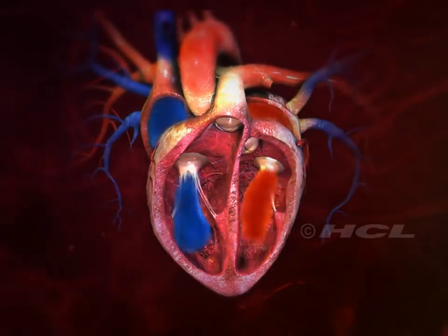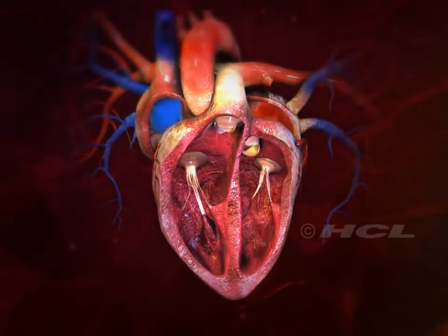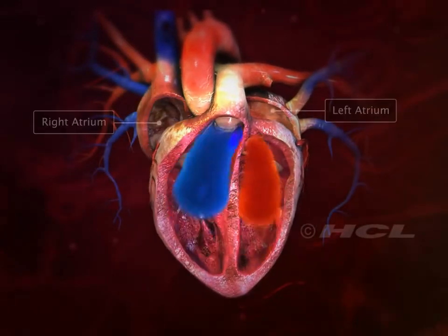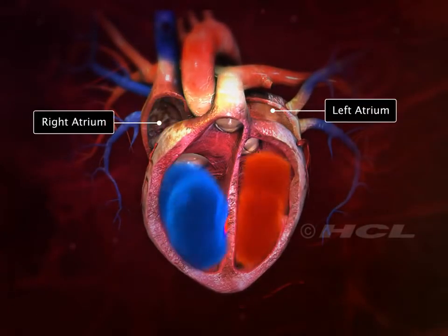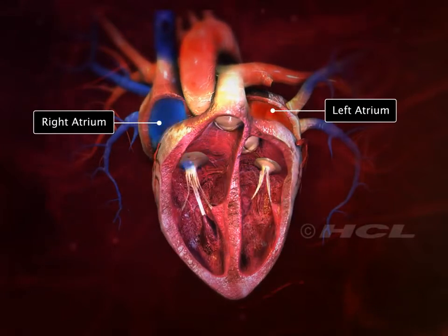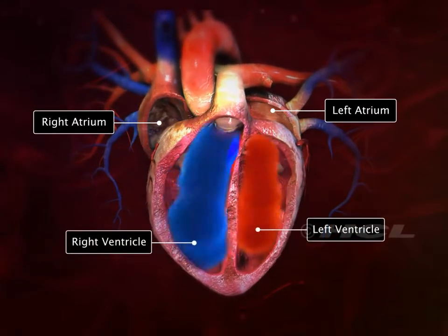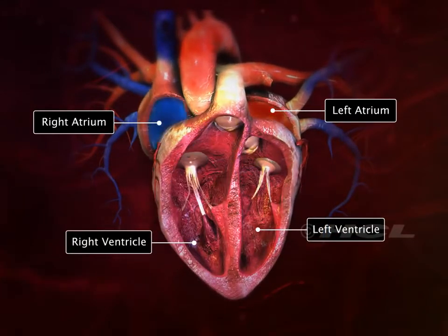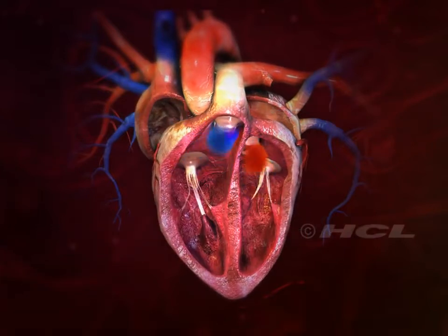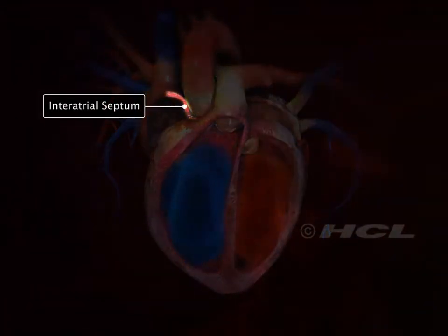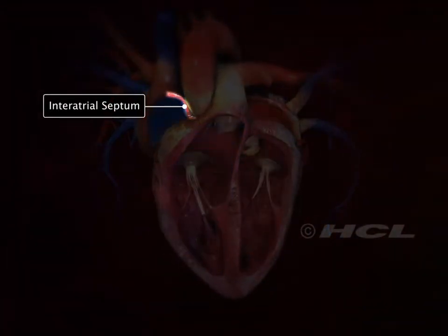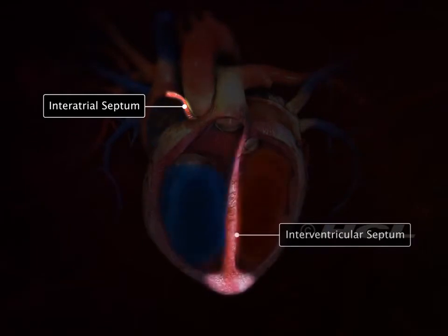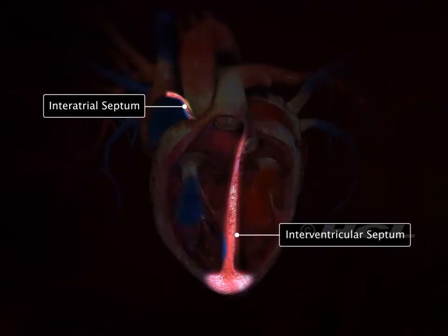The human heart has four chambers. The two upper chambers are the atria and the two lower chambers are the ventricles. The interatrial septum separates the two atria, and the interventricular septum is the partition between the two ventricles.